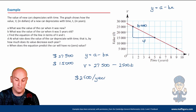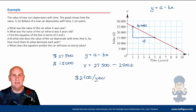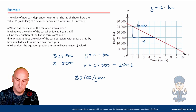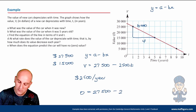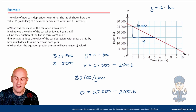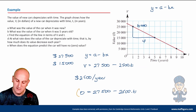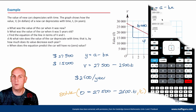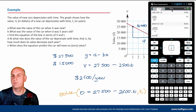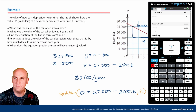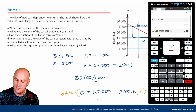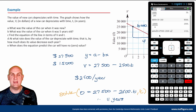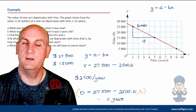When does the equation predict the car will have zero value? Set v = 0: 0 = 27,500 − 2500t. I'll use the solve function on my calculator — menu, algebra, option 3,1. Type: 0 = 27500 − 2500t, comma t. The comma t tells it to solve for time. The answer is t = 11, so the car will be worth nothing after 11 years.